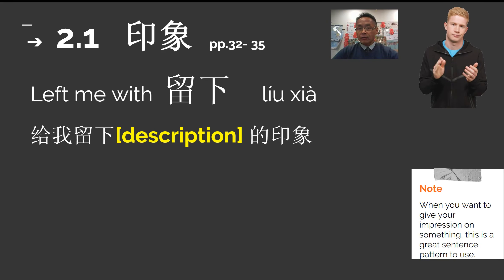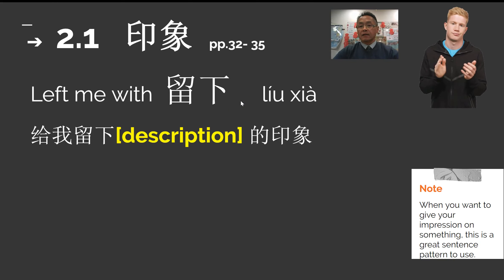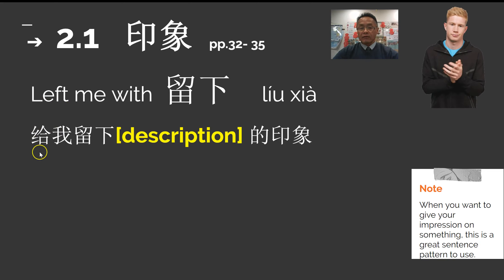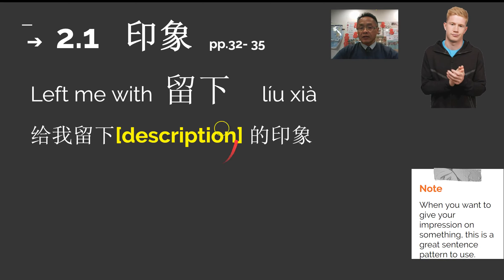同學們好, we're following on with our word 印象, impression. When we want to say 'left me with an impression', we need to use 留下 這個詞 — 留下, second and fourth tone — literally means 'to leave me with' or 'left me with'. And we need to use the verb 給. For example: 給我留下, 給我留下. Then you will put your description here, 的印象.